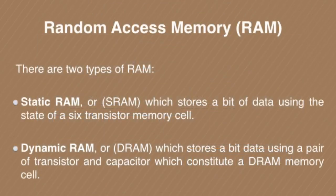We have seen what RAM is — that is Random Access Memory — which is used with cache memory as well as with primary or main memory. There are two types of RAM: one is Static RAM and the other is Dynamic RAM. Both are used to store a bit of data or information, but they are constructed in different ways.